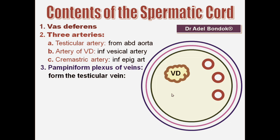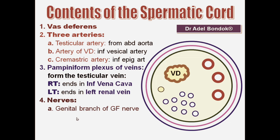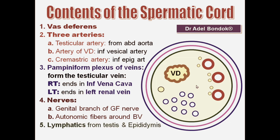Then veins: the pampiniform plexus of veins, which forms the testicular vein. The right testicular vein ends in the inferior vena cava. The left testicular vein ends in the left renal vein. Then nerves: the genital branch of the genitofemoral nerve, and autonomic fibers around the arteries. And lymphatics from the testis and epididymis. And the remains of processus vaginalis.